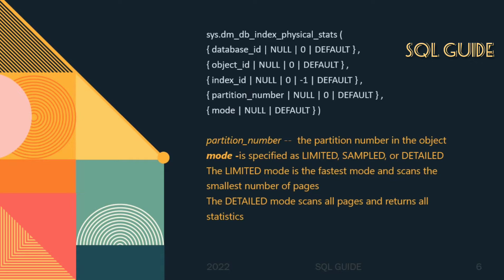You can pass database_id as null, which will return information for all databases in the instance of SQL Server. However, if you pass database_id as null, you must also pass object_id, index_id, and partition_number as null.